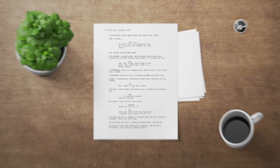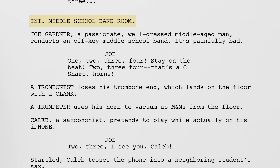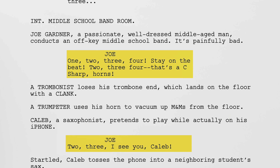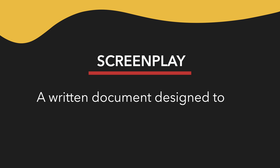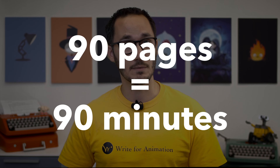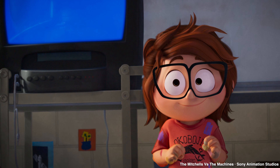These are the building blocks of a screenplay: your header, your action descriptions, and your dialogue lines. A screenplay, or script, is a written document designed to be translated into film or TV. In a script, one page translates to roughly one minute of screen time. An animated movie script is around 90 pages long, meaning about 90 minutes — but this is just an approximation.